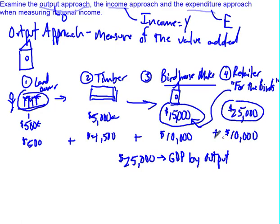We're measuring the output, which is the value added at each stage in production. For the macro economy, we'd apply this across different industries — for example, looking at the mining industry and the value they add, then the people who process the raw materials and the value they add, and so on.